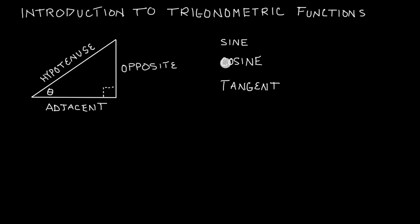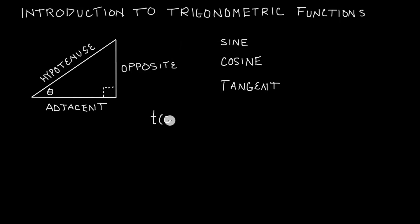For all three of these trigonometric functions, we're going to input an angle and we're going to get out a value — a relationship between two of these sides. So our functions are going to look something like this. I'll put t for trigonometric function, and then it's going to take an input of an angle, which we're calling theta, and then the output is going to be — I'll put r for ratio.